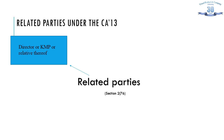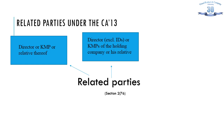Before understanding Related Party Transactions, we need to understand who all are my Related Parties. Section 2(76) defines Related Parties. It says a Related Party includes a director or KMP or relative thereof. It is important to understand that it is the Related Parties always of a company in the context of a company and not a person.